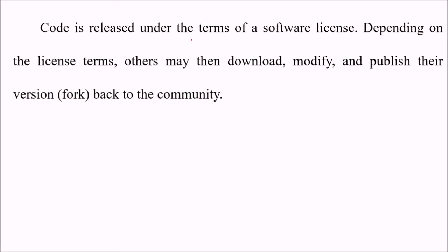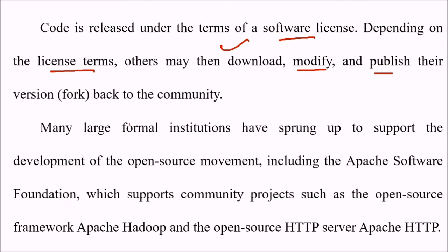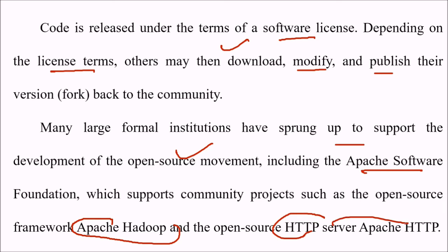Code is released under certain software licenses, and depending on the license terms, others may download, modify, publish, and fork it back to the community. Many large formal institutions have sprung up to support the open source movement, including the Apache Software Foundation, which supports community projects such as the open source framework Apache Hadoop and the open source HTTP server Apache HTTP.